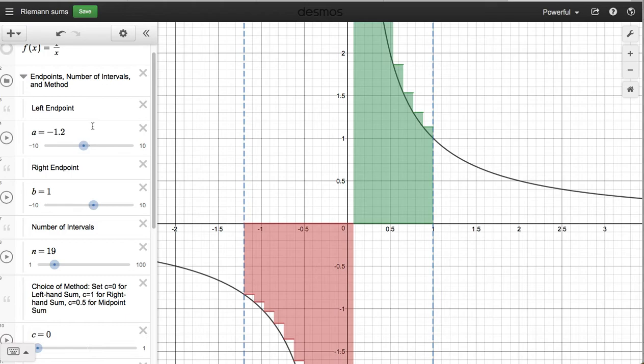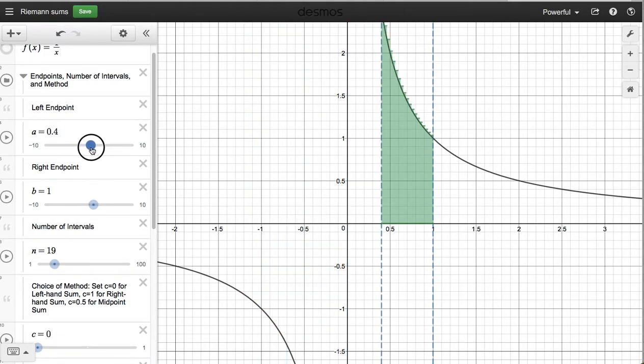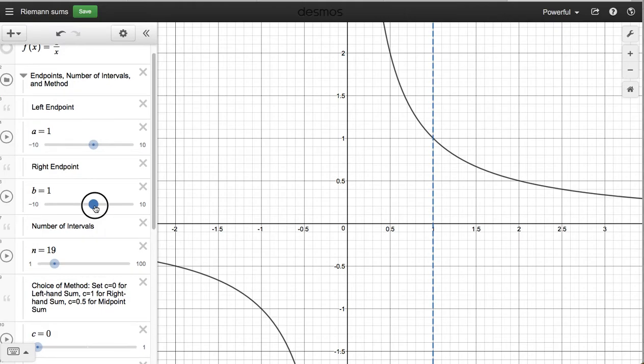So the left endpoint is identified by letter A here, and for me, that is going to be a 1. So I slide this over until I hit 1. There's my left endpoint. My right endpoint is supposed to be 3, and that is identified as letter B here. So I'll slide over to 3.